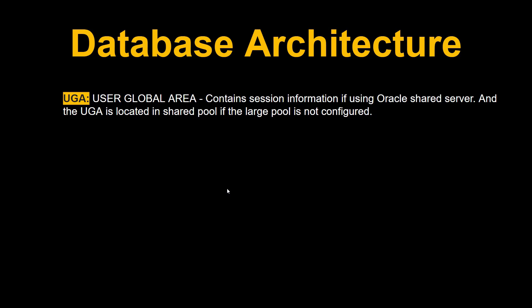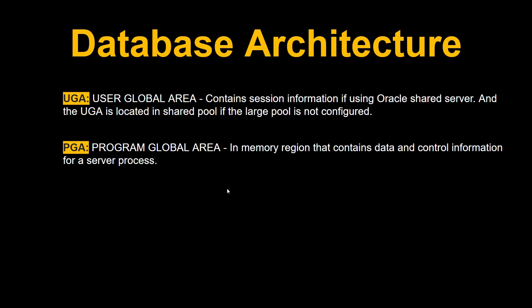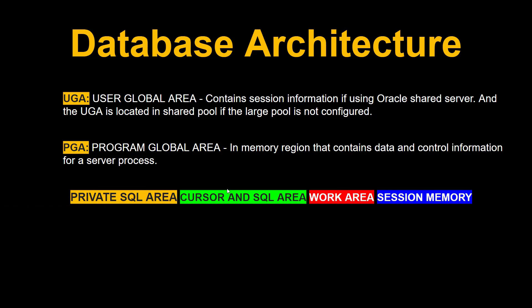Next is the PGA — Program Global Area. The PGA is a memory region that contains data and control information for a server process. The PGA has four components: private SQL area, cursor and SQL area, work area, and session memory.